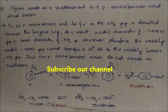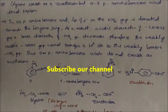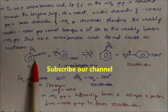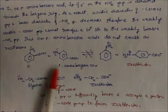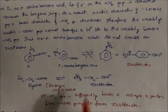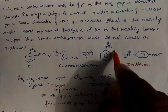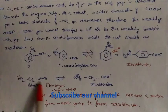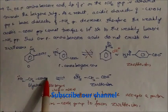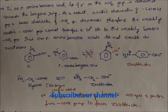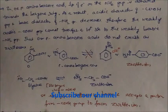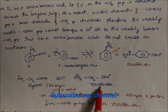So ortho and para aminobenzoic acids do not exist as zwitterions — you can see the COO⁻ is missing and the zwitterion form is not possible. However, in glycine, the electron-withdrawing benzene ring is absent, so the hydrogen can easily transfer to the amino group. The NH₂ group is sufficiently basic to accept a proton from the carboxyl group, forming the zwitterion.